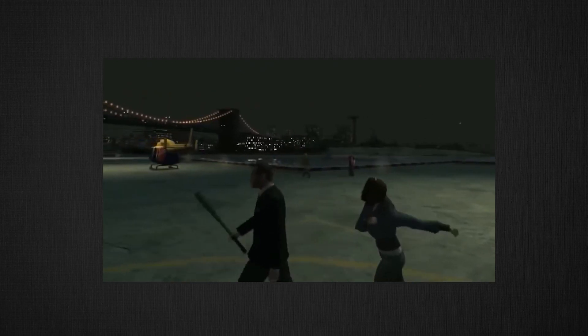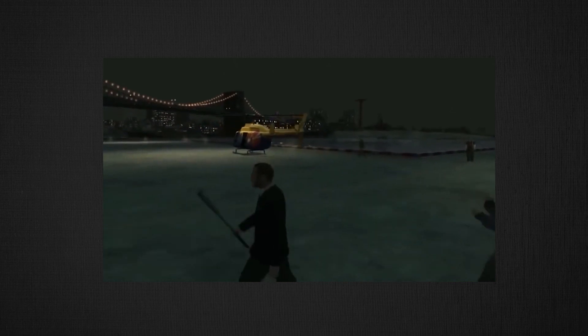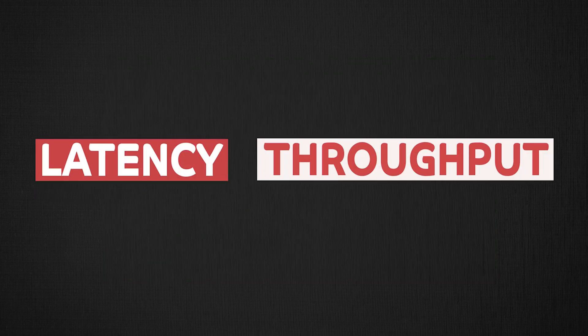If you have ever experienced lag or slowness in a video game, it was most likely due to a combination of high latency and low throughput. Latency and throughput are the two most important measures of performance of any software system. They are actually simple concepts, but are often misunderstood and used incorrectly during technical discussions. In this video, I'll clarify these terms so that you can use them confidently in your tech discussions or design interviews.